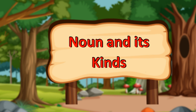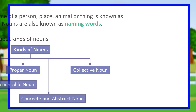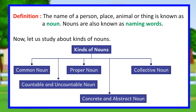Noun and its kinds. Definition: the name of a person, place, animal or thing is known as a noun. Nouns are also known as naming words. Now let us study about kinds of nouns.